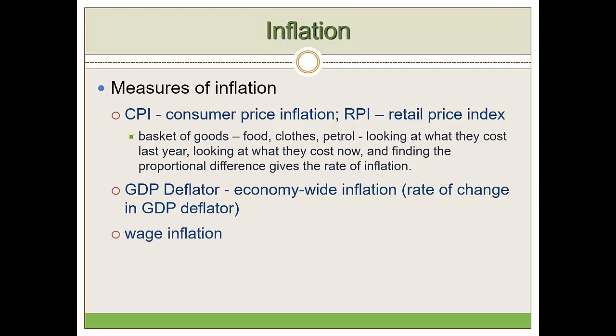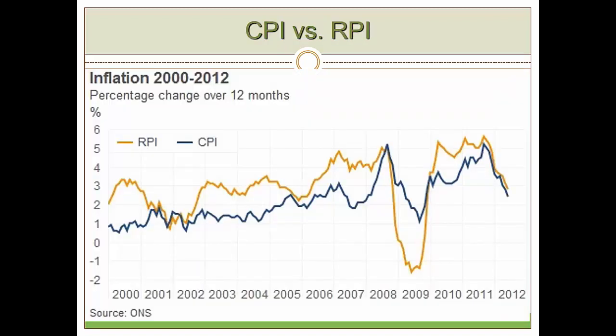Wage inflation takes the wages of workers or certain categories of workers and compares last year's wages to calculate how much wage inflation occurred in the economy. There is also an inflation rate of commodity prices, and quite a few other measures we will look at.